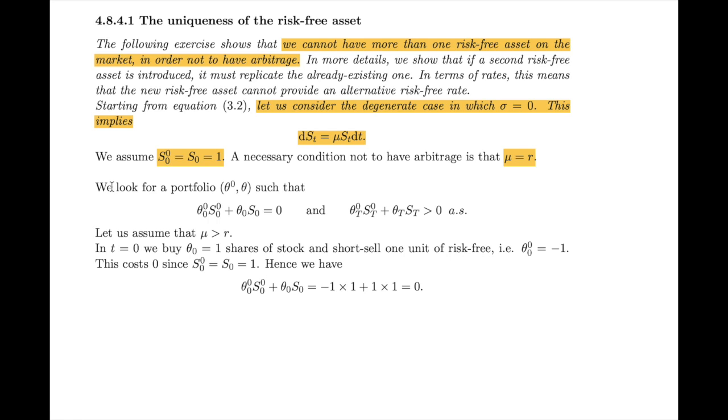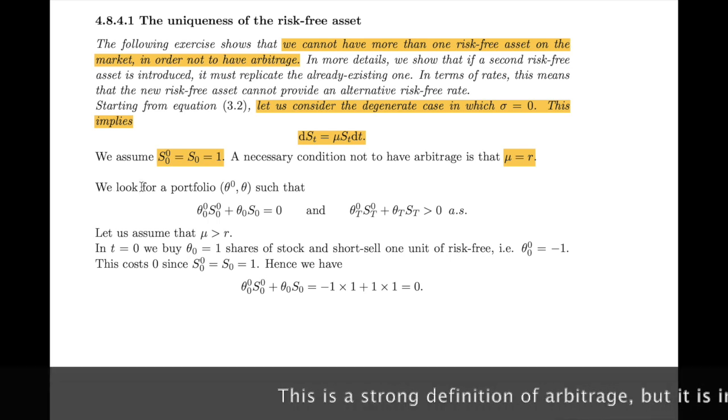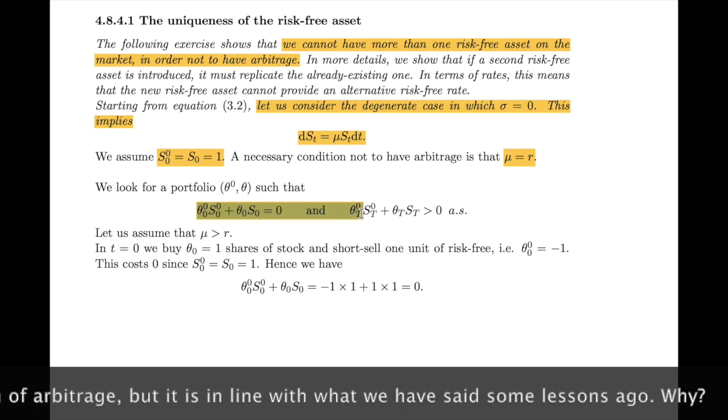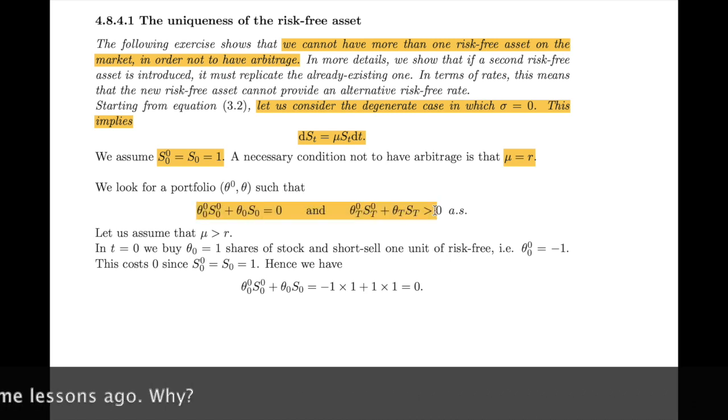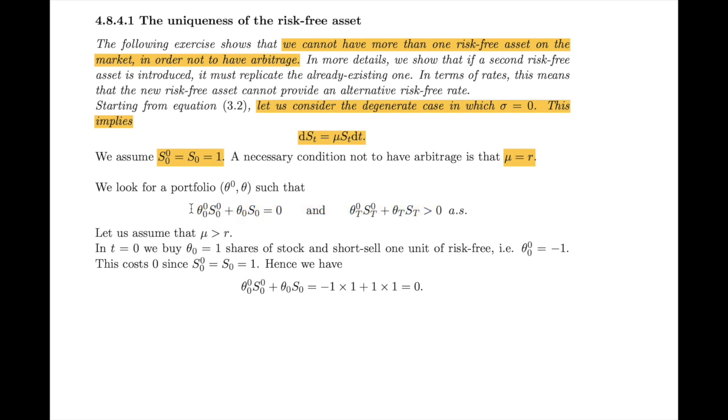An arbitrage is a portfolio whose value at 0 equals 0, and whose value at maturity is positive almost surely. Consider the case where mu is strictly larger than R. What can we do at t=0? We can short-sell one unit of the risk-free, so theta_0^0 equals minus 1. With that amount, we buy one unit of the stock. We keep calling it the stock, but remember this is a degenerate case, so it's actually another risk-free asset. So we have theta_0^0 = -1 and theta_0 = 1.